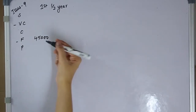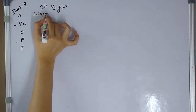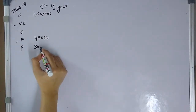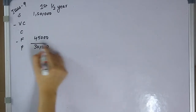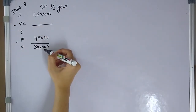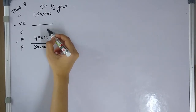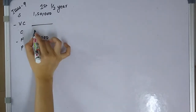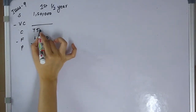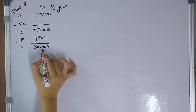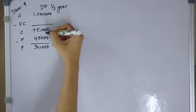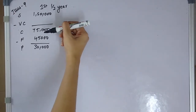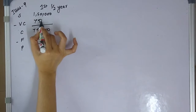Sales value is 150,000. Profit is 30,000. Contribution equals fixed cost plus profit, so contribution is 45,000 plus 30,000, which gives us 75,000.